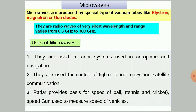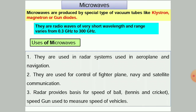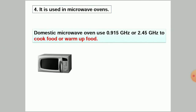Second, microwaves are used for the control of fighter planes, navy, and satellite communications. Third, radar provides the basis for speed guns used in tennis and cricket, and to measure the speed of vehicles. Fourth, microwaves are used in domestic microwave ovens, which operate at 0.915 gigahertz or 2.45 gigahertz to cook or warm up food.